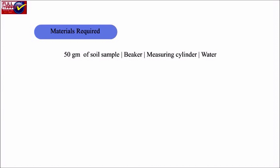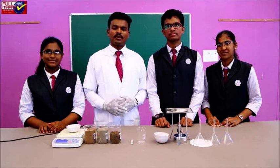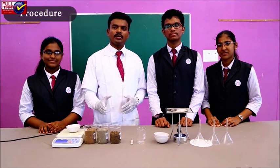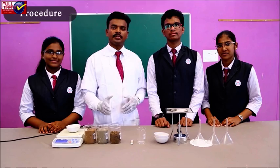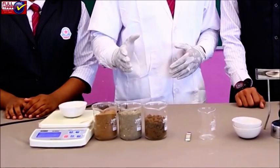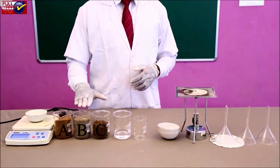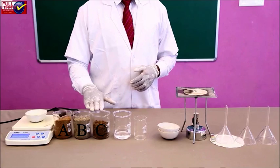Materials required: 50 grams of soil sample, beaker, measuring cylinder, and water. Procedure: Collect soil samples from 3 different locations. Label them as A, B, and C respectively.